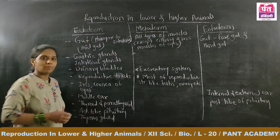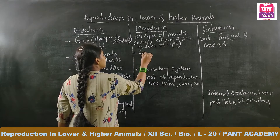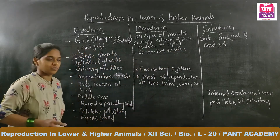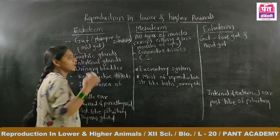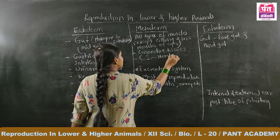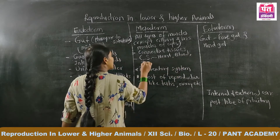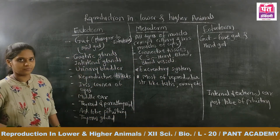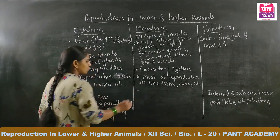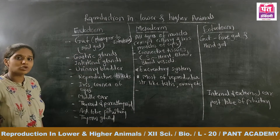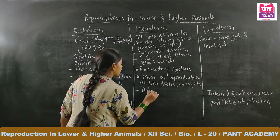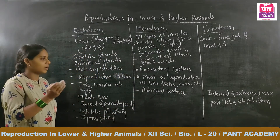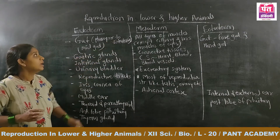Other structures made up of or lined by mesoderm include connective tissues and the circulatory system. The circulatory system — including the heart, blood, and blood vessels — is also made up of mesoderm. One more structure lined by mesodermal cells is the adrenal cortex. The adrenal gland has two portions: medulla and cortex. The cortex of the adrenal gland is made up of mesoderm.